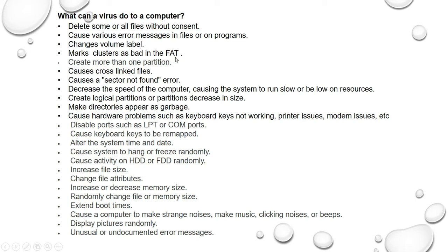FAT stands for File Allocation Table. The virus creates more than one partition, causes cross-linked files, causes a 'set or not found' error, decreases the speed of the computer causing the system to run slow or be low on resources, and creates logical partitions or causes partitions to decrease in size.